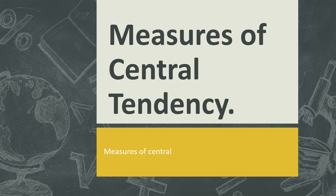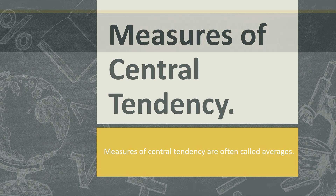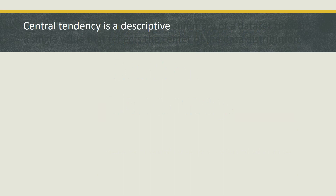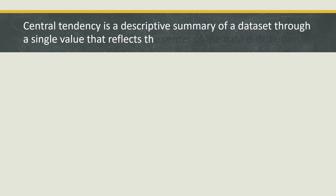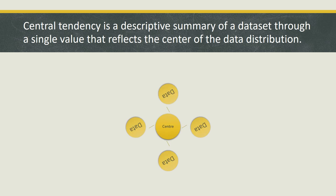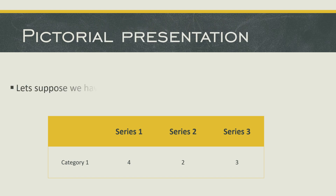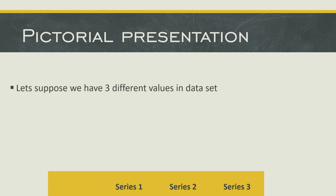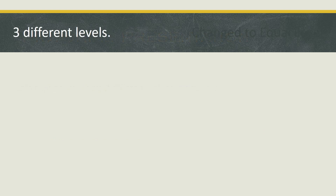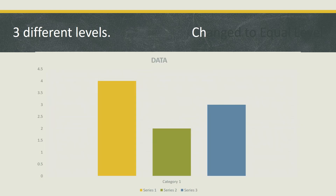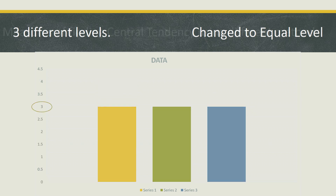Central tendency is often called averages. It is a descriptive summary of a data set through a single value that reflects the center of the data distribution — it has one center only and the data circulates around it. A pictorial representation could be: if we have three values in different stacks, we convert them into equal levels — that is what we call central tendency.